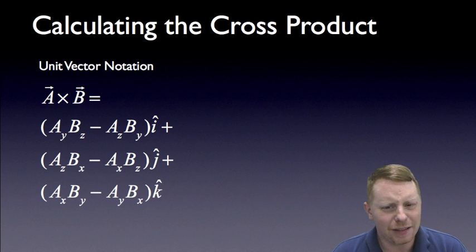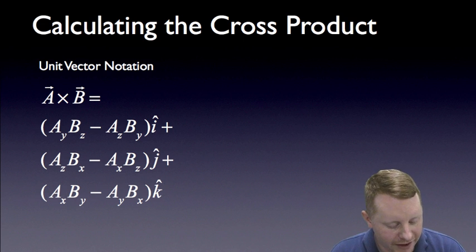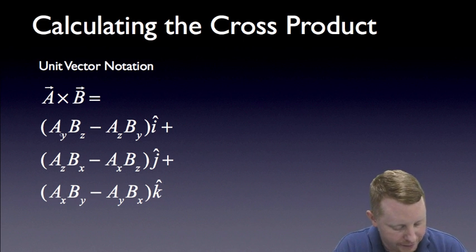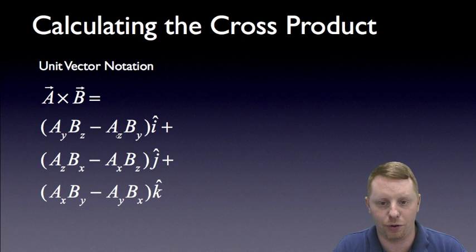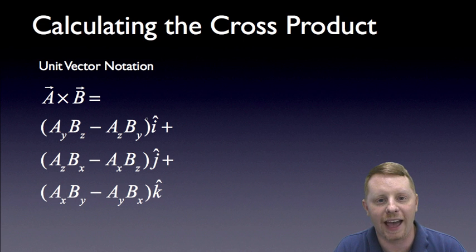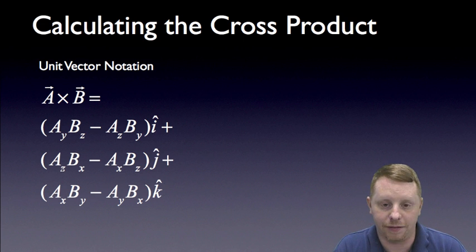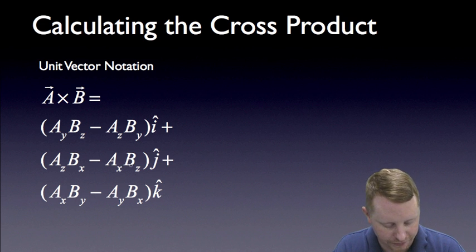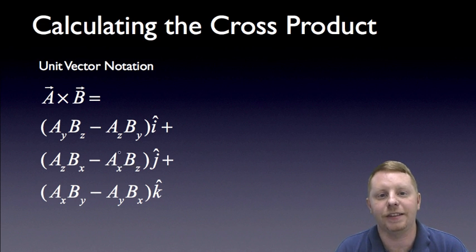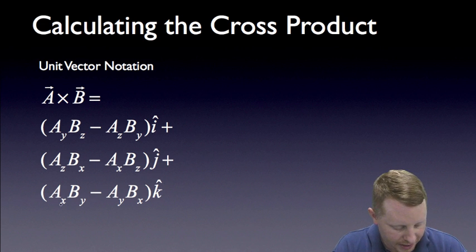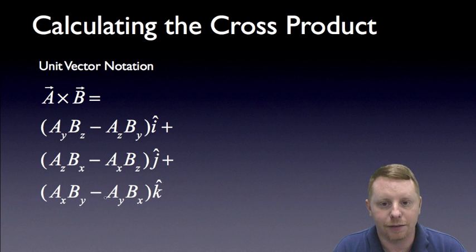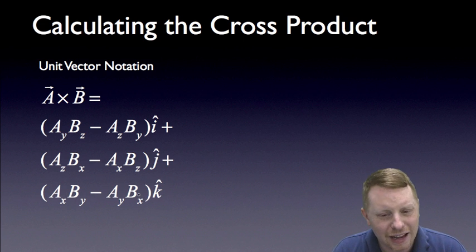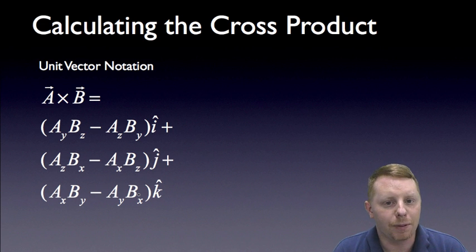Calculating the cross product in unit vector notation can be a little bit trickier. a cross b is equal to the y component of a times the z component of b, minus the z component of a times the y component of b, all in the direction of i hat. That gives you your x component of vector c. To get the y component, you take the z component of a times the x component of b and subtract the x component of a times the z component of b. For the z component, take the x component of a times the y component of b, and subtract the y component of a times the x component of b.